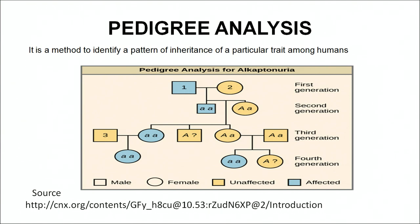Through pedigree analysis, the genetic counsellor can always suggest what the chances are for an individual who is a carrier or is affected by a disease — what percentage chance they have of bearing a normal child. Through pedigree analysis we can find out whether the child to be born is going to be normal or affected. With this we have covered genetic engineering, DNA fingerprinting, pedigree analysis, and genetic counselling. You must have enjoyed this chapter. Thank you.